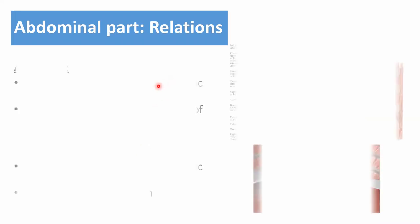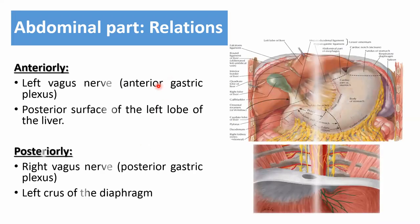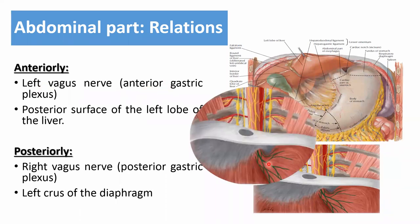Relations of the abdominal part: anteriorly the anterior gastric plexus (branch of the left vagus nerve) and the posterior surface of the left lobe of the liver; posteriorly the posterior gastric plexus (branch of the right vagus nerve) and the left crus of the diaphragm.